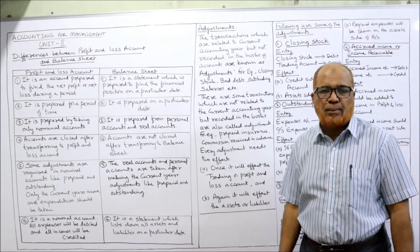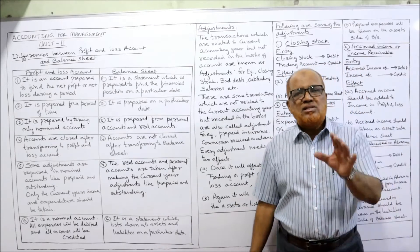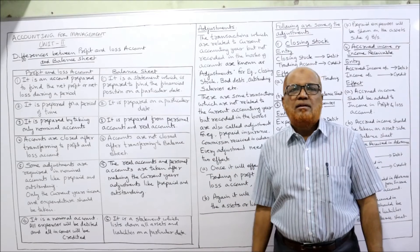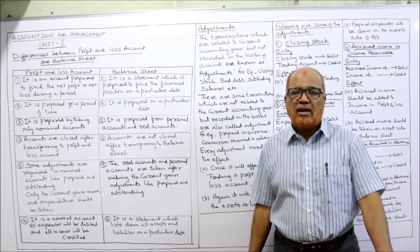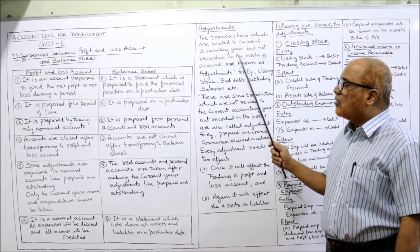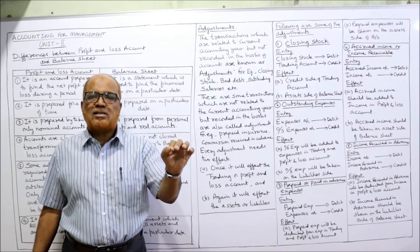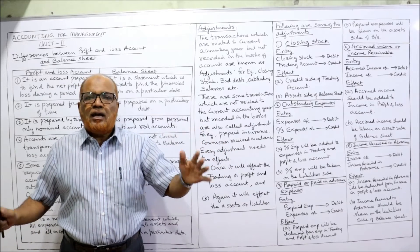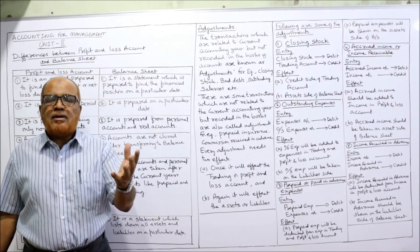The next topic in this video is adjustments — this is very important from a problem-solving point of view. If you understand adjustments clearly, you will not find difficulty while solving problems on financial statements. What do you mean by adjustments? Adjustments are transactions which are related to the current year but not recorded in the books of accounts. While preparing financial statements we should consider all income and expenditure of the current year, whether received or not, whether paid or not.